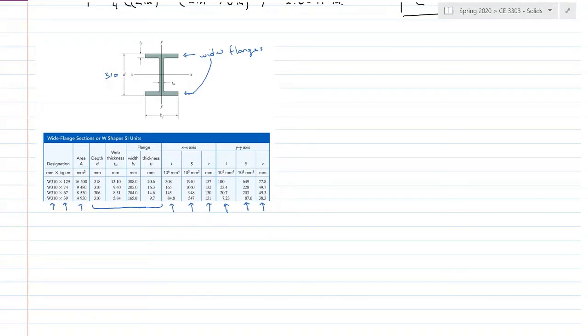This is also information that you can find in steel manuals, aluminum manuals, and those kinds of things. And we are going to be using Appendix B for our next example.